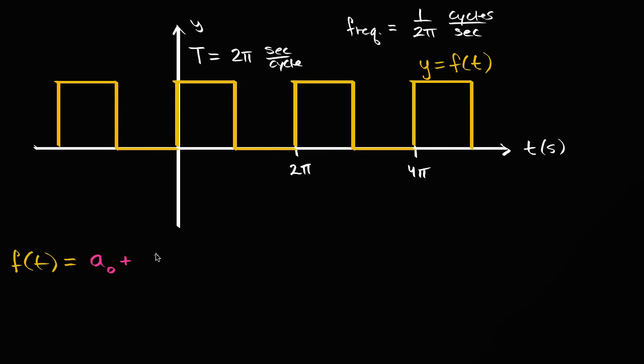And so let's take a sub one times cosine of t. Now why am I starting with cosine of t? And I could also add a sine of t. So plus b sub one, plus b sub one sine of t.